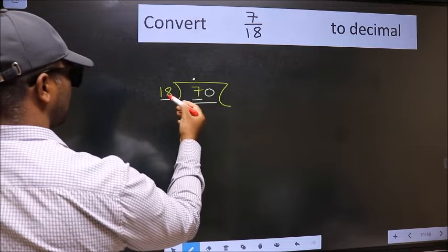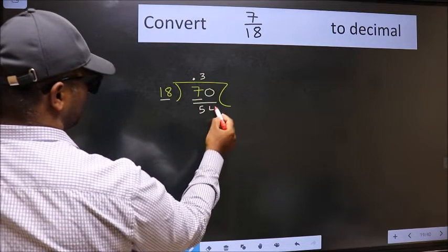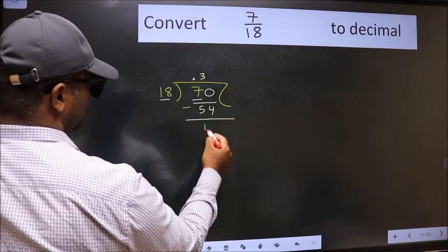A number close to 70 in 18 table is 18 threes, 54. Now we should subtract. We get 16.